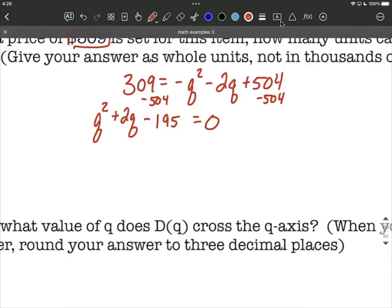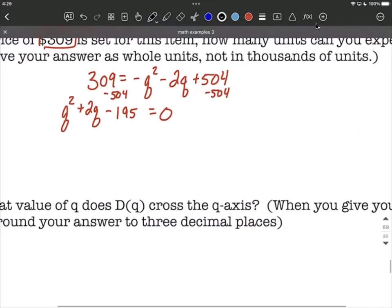From here, we have zero on one side. We could always pull out the quadratic formula, plug in 1 for a, 2 for b, and negative 195 for c, and work it down. But I think 195 is actually not too bad to do some factoring with, because 195 doesn't factor that many different ways. It could be 3 times 65, it could be 5 times 39, or it could be 13 times 15. And those are all the ways to factor 195. Use the quadratic formula if that's easier for you, but I'm going to go through this part using factoring.